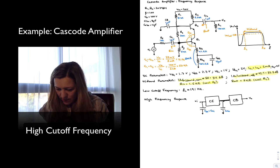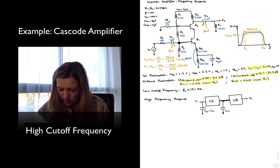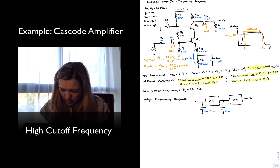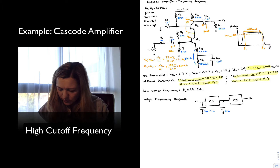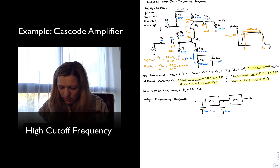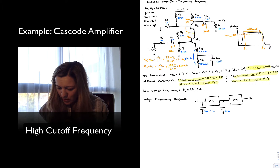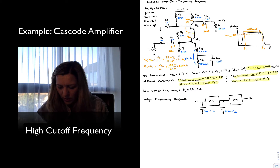I'm also going to have some input capacitance from Q2 — I'm going to look at Q2 now. I'm going to have CBE and CBC for Q2. I'm going to add my CBE capacitance to my Miller output capacitance, because it's going to be approximately parallel with it. So C2 will be CMO plus CBE. And then at my output, I'm just going to have my CBC as C3.